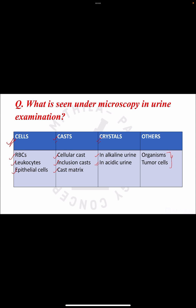The next question is: what will be seen in the microscopy of a urine examination? First, we can see cells — either WBCs, RBCs, or epithelial cells. Then casts, which can be cellular casts, inclusion casts like granular cast, RBC cast, WBC cast, or cast matrix like hyaline cast. Then crystals — in alkaline urine we find triple phosphate, and in acidic urine we find uric acid crystals and calcium oxalate crystals. We can also find organisms like fungi, bacteria, and certain parasites like Trichomonas or microfilaria, or even tumour cells.